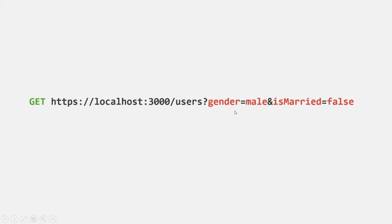Always remember that a query string is not part of the route. So in this example, the route will be root URL slash users. Query strings are not considered part of the route — they are just extra data which we are sending to the server through the URL.